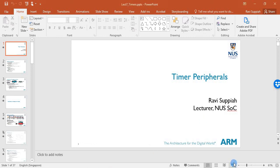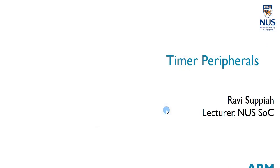Hi, welcome to this e-lecture on timer peripherals. In this lecture, we are going to be looking at the timer modules of the Cortex M0+ on the Freedom board. This is important because the timer modules help us to keep track of regular or periodic events, and they play an important role in generating the PWM signals we need to control our motors. So let's get started.